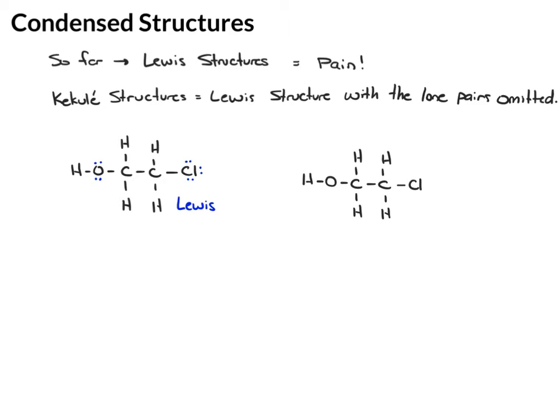The Kekulae structure is very similar, but we leave out the lone pairs. His rationale makes sense - you just need to know there's enough lone pairs to make an octet. The chlorine has two electrons in the bond, so it must have three lone pairs for an octet.